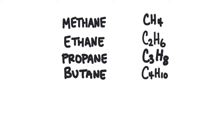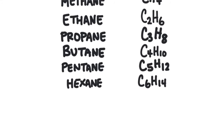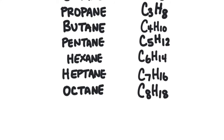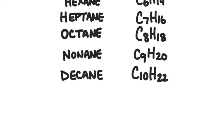Pentane has five carbons. Hexane has six carbons. Heptane has seven carbons. Octane has eight carbons. Nonane has nine carbons. And decane has ten carbons.